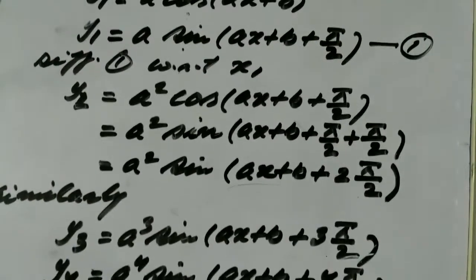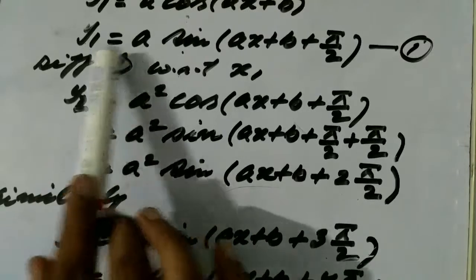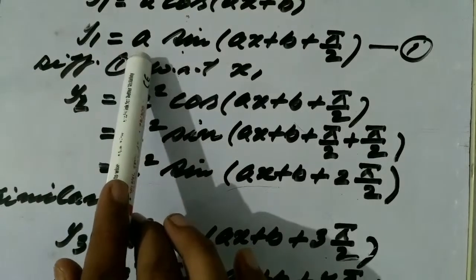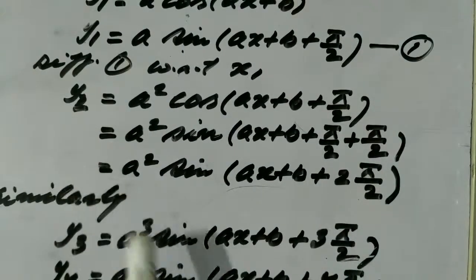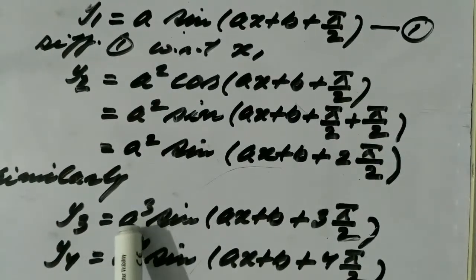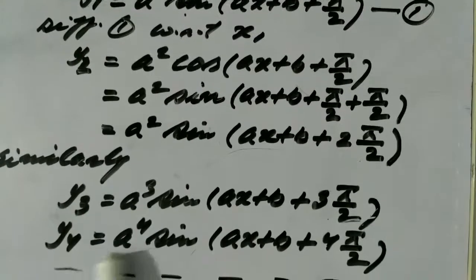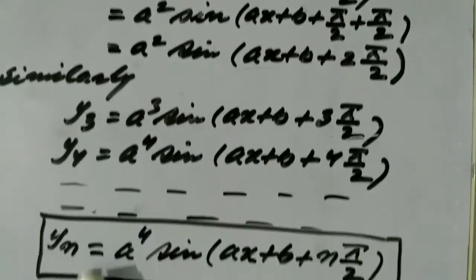Analogy is the process to observe the pattern of the expression so that we may write the nth value of the expression. As we see, the exponent of a is 1 in y1, exponent of a is 2 in y2, exponent of a is 3 in y3, 4 in y4, so the exponent of a in the nth derivative must be n.